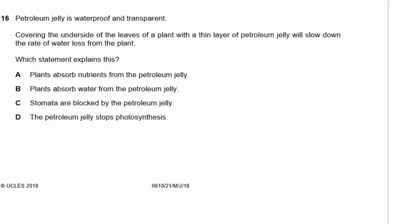Question 16: Petroleum jelly is waterproof and transparent. Covering the underside of leaves with petroleum jelly slows water loss. Which statement explains this? The stomata are blocked by the petroleum jelly — that is definitely the answer, because stomata are holes and nothing can get in or out when they're blocked. This also prevents transpiration, so water can't be pulled up from the roots.